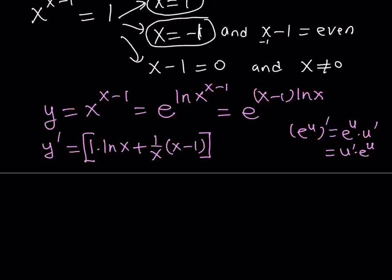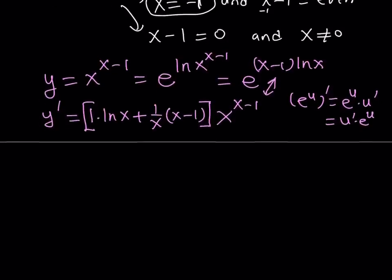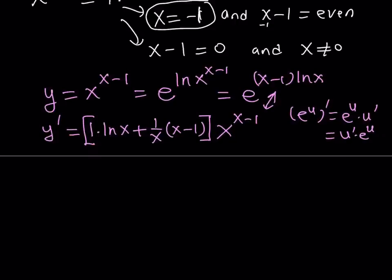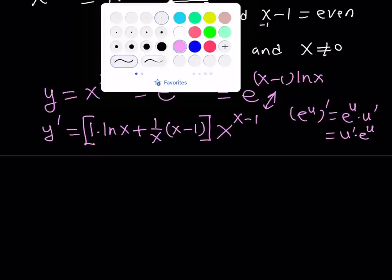And this will be multiplied by e to the power of that, but I can also write it as x to the power x minus 1, which is the same as this one. Great. So that's the derivative. And what I'd like to do with this derivative is I want to set it equal to 0. Why am I doing this? You're going to see in a little bit.